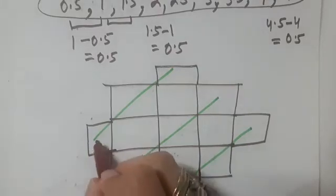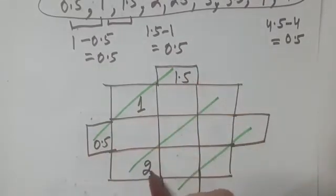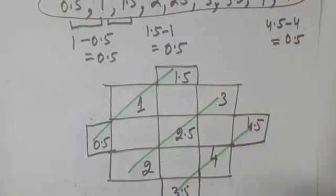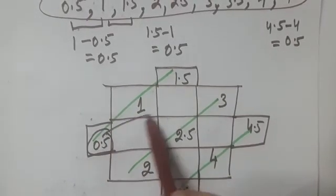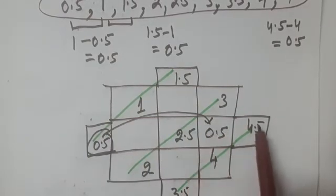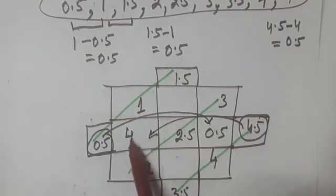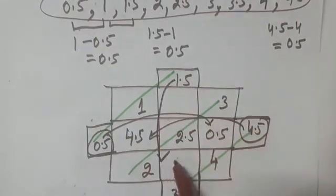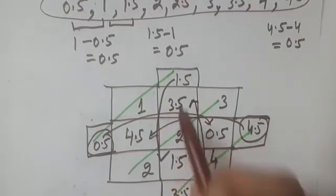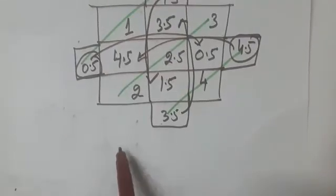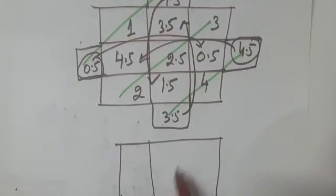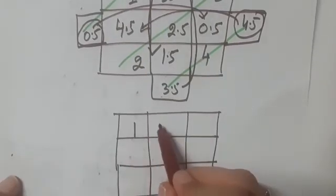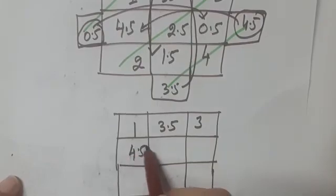I'm writing 0.5, 1, 1.5, then 2, 2.5, 3, then 3.5, 4, 4.5 in the diagonals. Now, where should 0.5 go? Yes, you are right — it will go to this place. Where should 4.5 go? Very good — it will go here. Similarly, 1.5 will come here and 3.5 will go here. So here you can see that you have got a magic square. Try to add the numbers in each row and each column — can you guess what the answer will be?